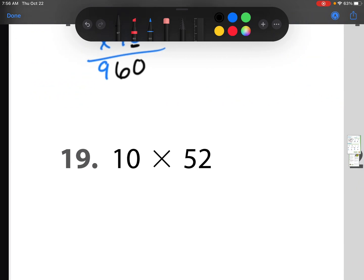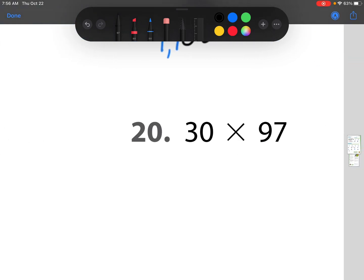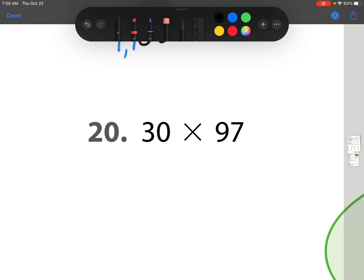Now we have 52 times 10. So I'm going to put a zero down, and look, my basic math fact is 1 times 52. And remember, 1 times anything is always the same number. So I just really need to add a zero to that one. All right, 97 times 30. Put a zero down, since I have a zero in that ones place value. And now I have 3 times 7 is 21. Regroup that 2. 3 times 9 is 27, plus 2 is 29. 2,910.